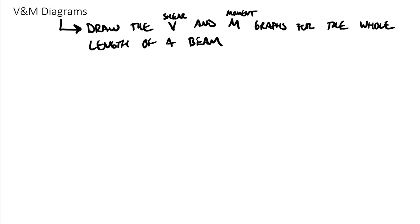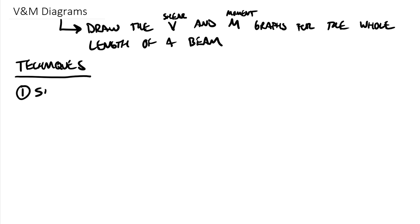There are actually three different techniques to draw shear and moment diagrams, all three outlined in the Engineering Statics textbook at engineeringstatics.org. The first method is called the section cut technique. The section cut technique looks a lot like finding shear and moment at one single point, except when you cut it, you cut it in basically each loading segment and then write a distance-variable equation.